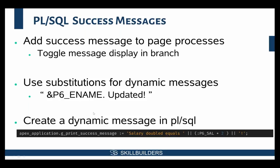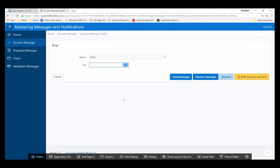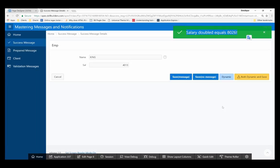But sometimes you want a success message that leverages an item in session state but requires some math or calculation — something beyond just displaying a current value. The way to do that is to set a global variable called G_PRINT_SUCCESS_MESSAGE to whatever value you wish to display. In this case, I'm saying 'Salary Doubled equals' and doing some math on the salary field. You can see the current value is around 1,413, and if I say 'Display My Dynamic Message,' you can see it actually doubles the value. That's not calculated into an item in session state — we just calculate the value, build it into the display message, and present it.